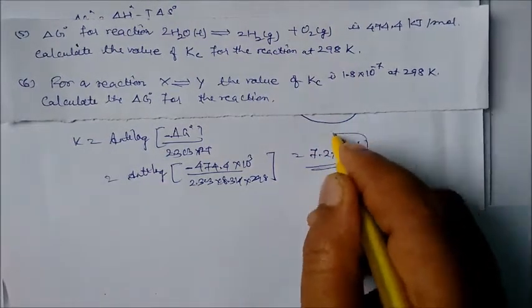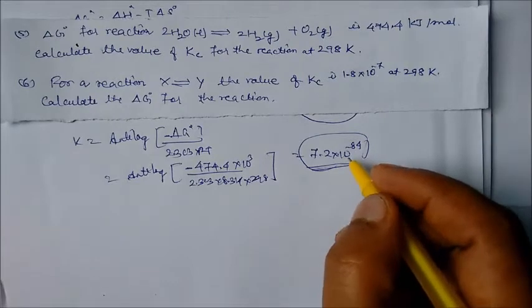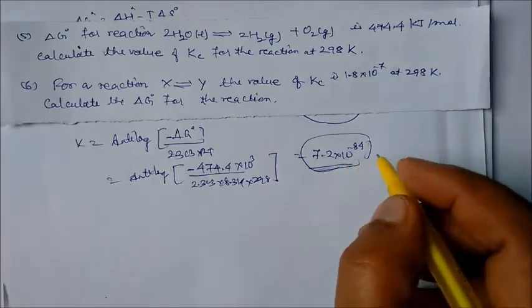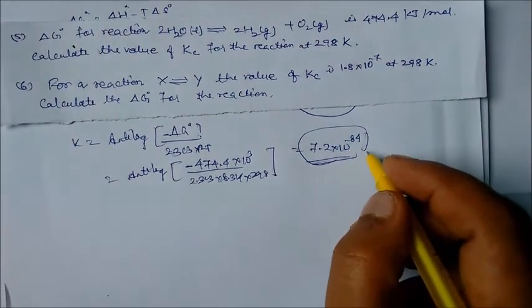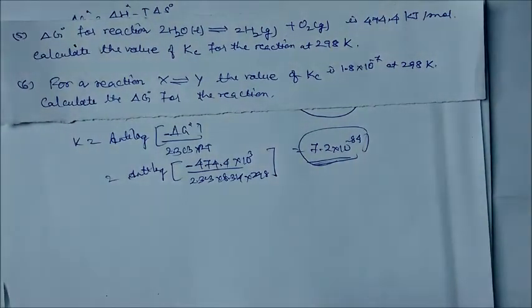This very small Kc value indicates that the reaction proceeds very slowly — it will take place at an extremely low rate.